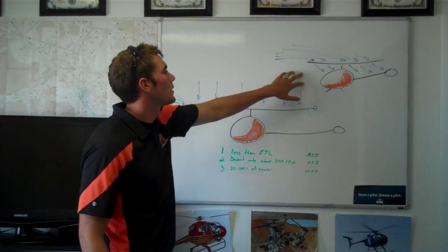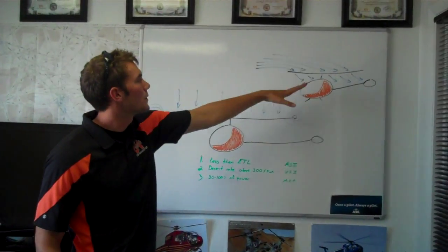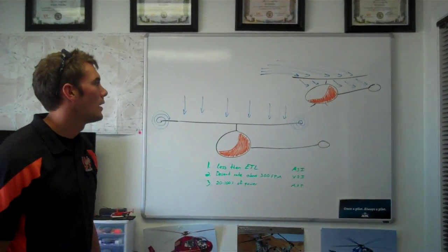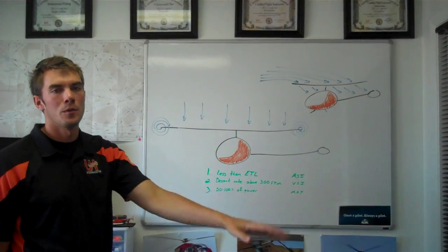Basically, this is the helicopter during forward flight. You can see the air is coming through the rotor system, goes down and out the back, and it cycles through the air as we move forward.